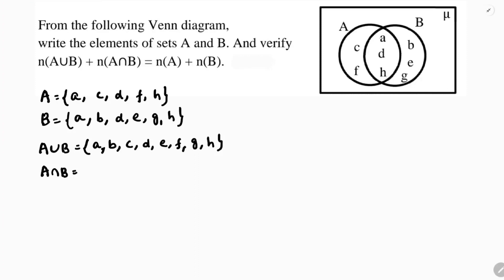For A intersection B, we take only the common elements. The common elements are {a, d, h}.